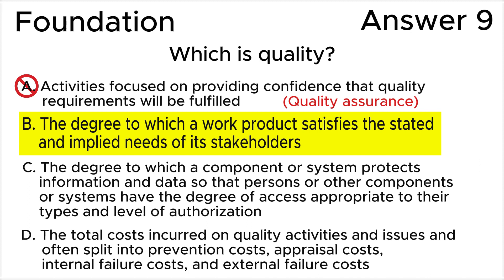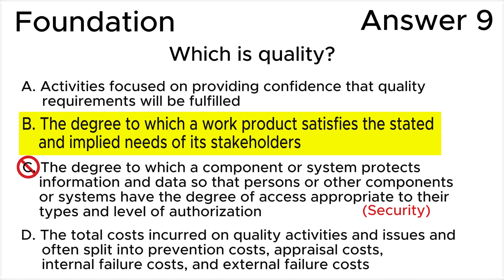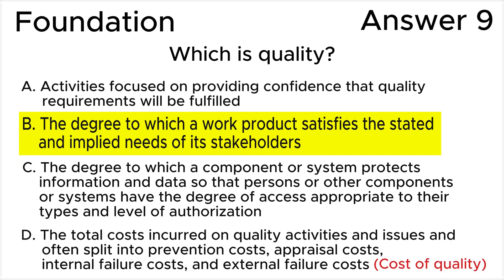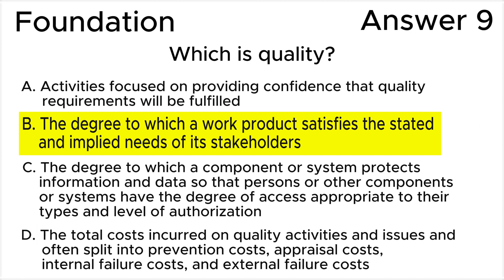Let's see why the rest of the answers are wrong. Answer A is the definition of quality assurance from the ISTQB glossary. Answer C is the definition of security from the ISTQB glossary. Answer D is the definition of cost of quality from the ISTQB glossary.